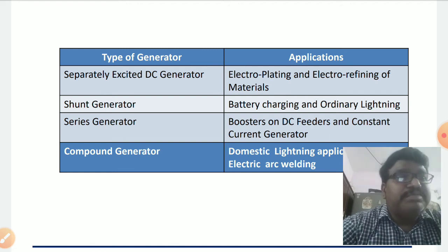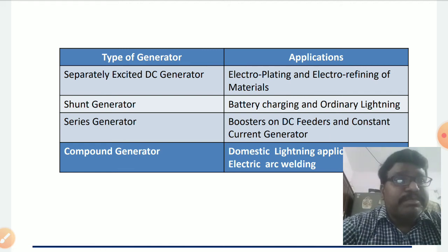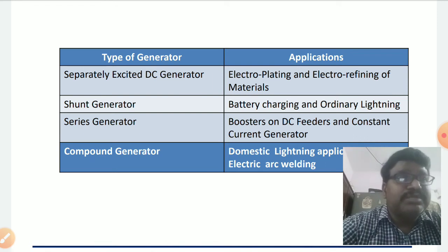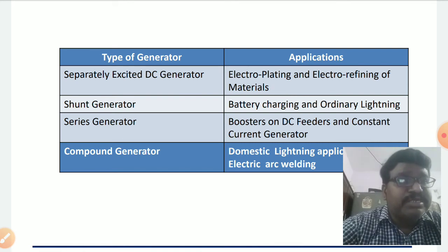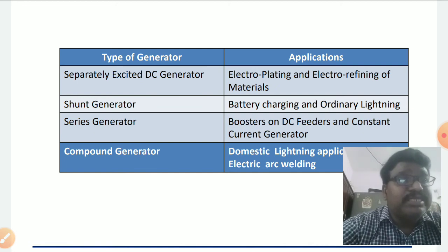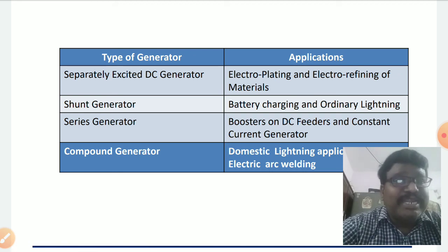The shunt generator is mainly used for battery charging purposes, because battery charging requires constant voltage. Similarly, it is also used for ordinary lighting purposes. So the two major applications of the shunt generator are battery charging and ordinary lighting.